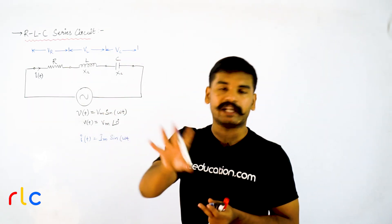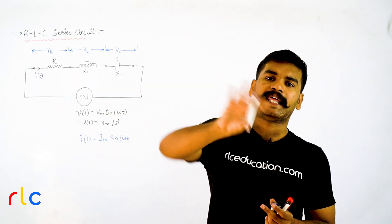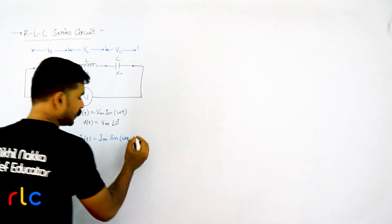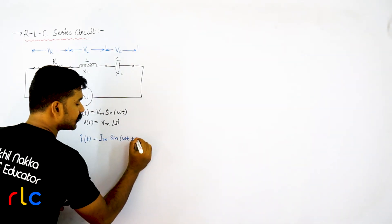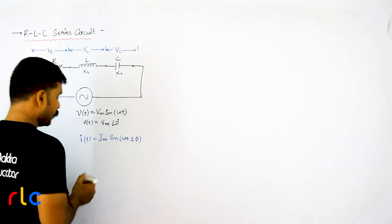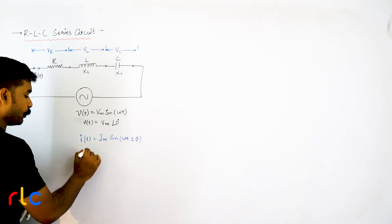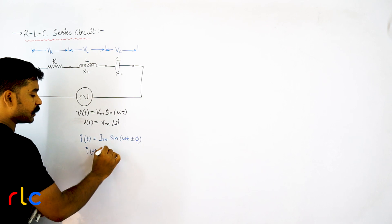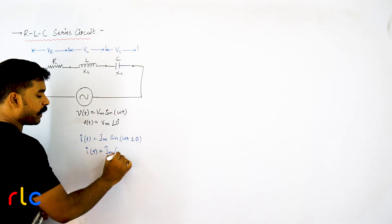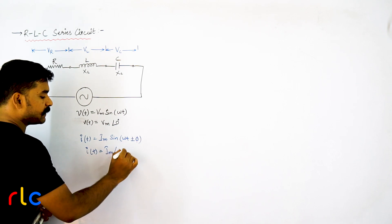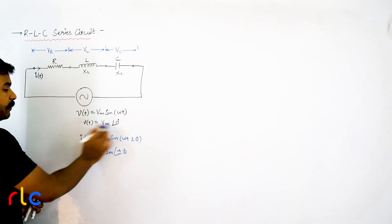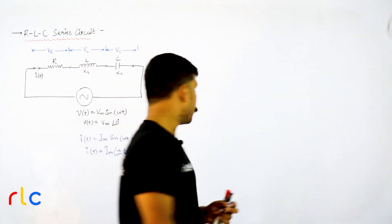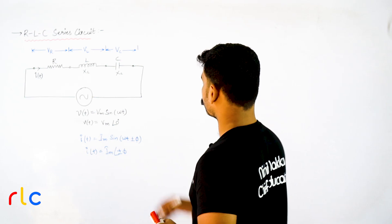So the conclusion is that somehow there will be some angular difference — some plus or minus phi. This is how we write the current equation: I of T equals Im sin(omega t ± phi). In polar form, the current has magnitude Im at angle plus or minus phi.